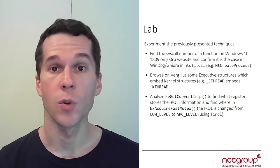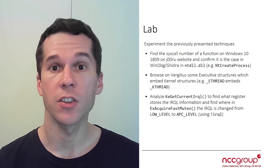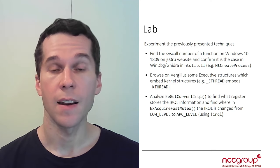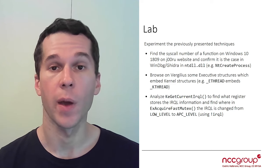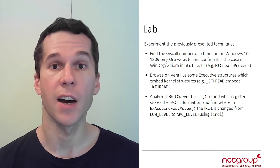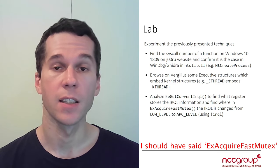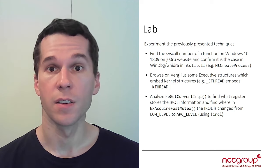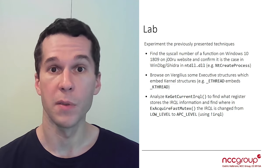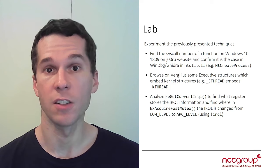Then it's going to be time to analyze different IRQLs in your debugger. You're going to first start by analyzing the KeGetCurrentIRQL function to understand in what register the IRQL is saved. Then we are going to look at one function that actually modifies the IRQL — this function is called KeAcquireFastMutex. Because you know in what register the IRQL is saved, you'll set a breakpoint before the IRQL is changed and see the actual change of IRQL happening by stepping over that instruction.